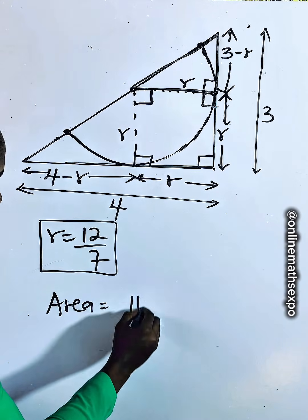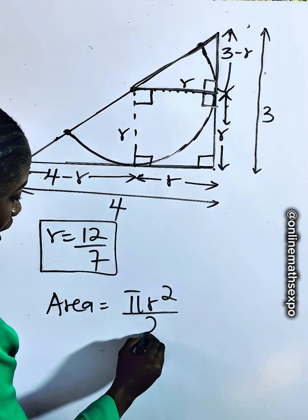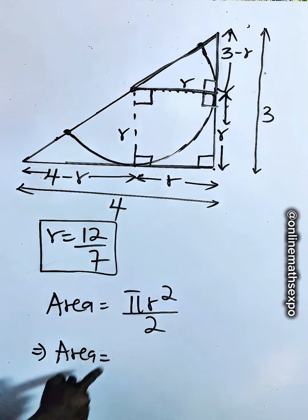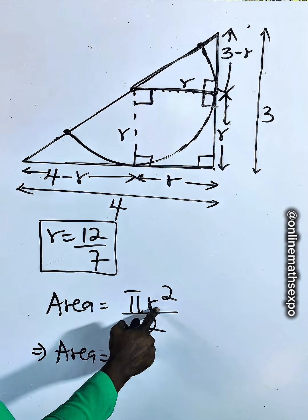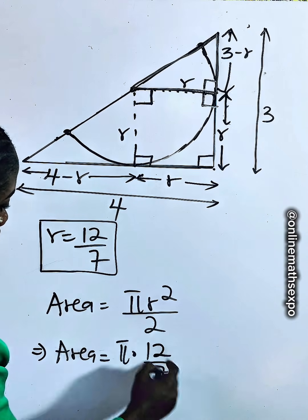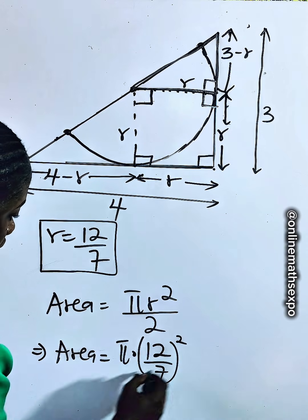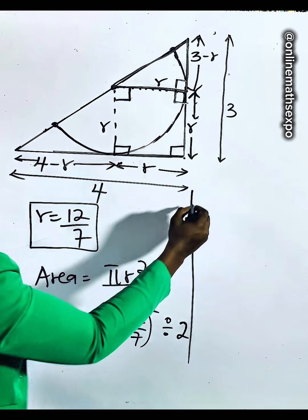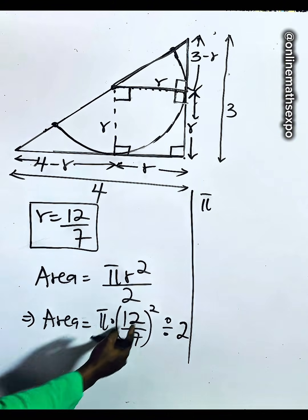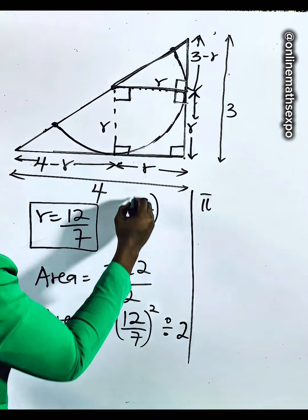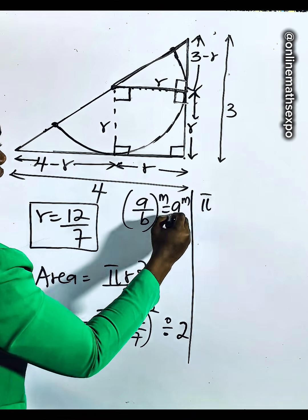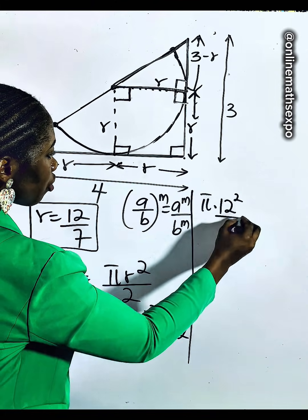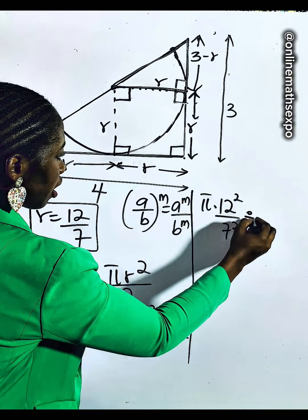The area of the semicircle equals pi R squared divided by 2. Our radius is 12 over 7, so we have pi times (12/7) squared, all divided by 2. Remember that (a/b) raised to power m equals a to the m over b to the m. Applying this gives us 12 squared over 7 squared, divided by 2.